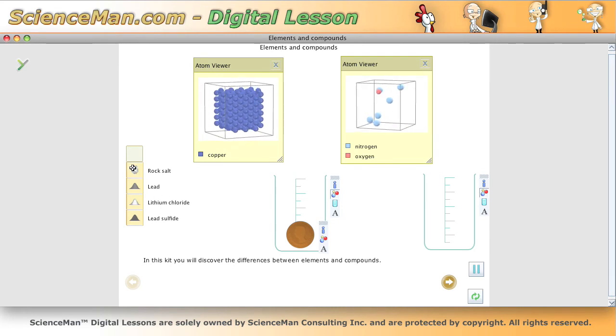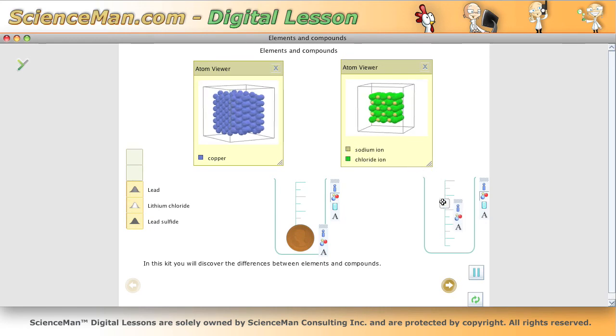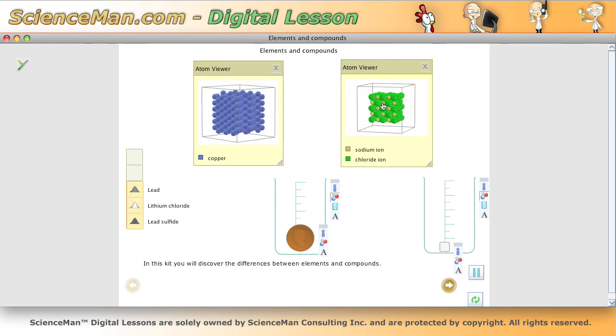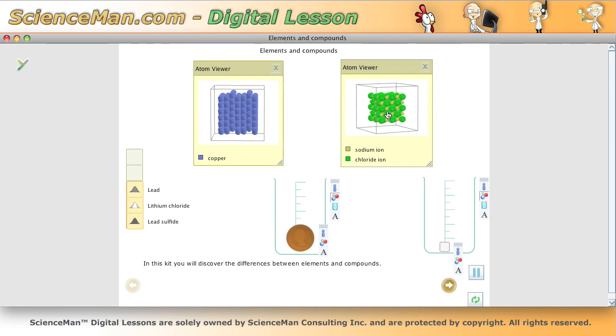Now I'm just going to take salt here and drag it into this beaker, and if you look closely you'll see that there are two different types of atoms arranged in a crystal lattice. And if there are two different types of atoms present, then we're looking at a compound. In this particular case we're looking at an ionic compound.